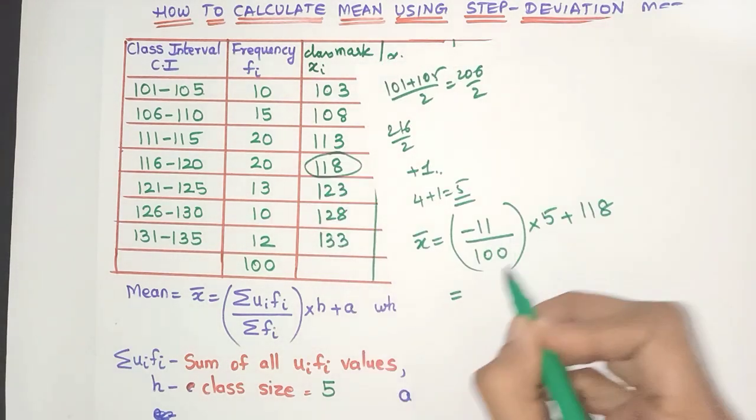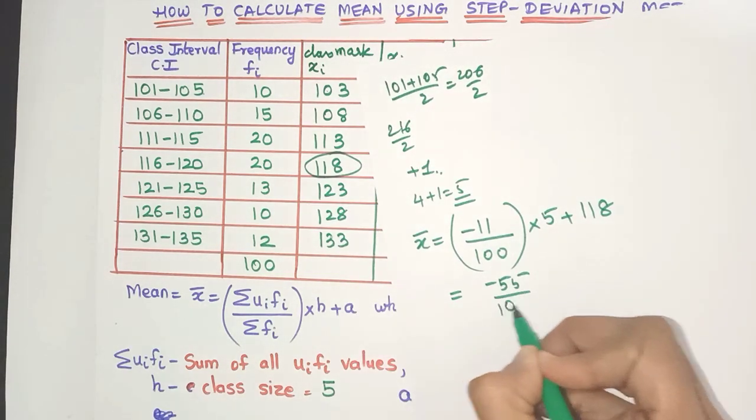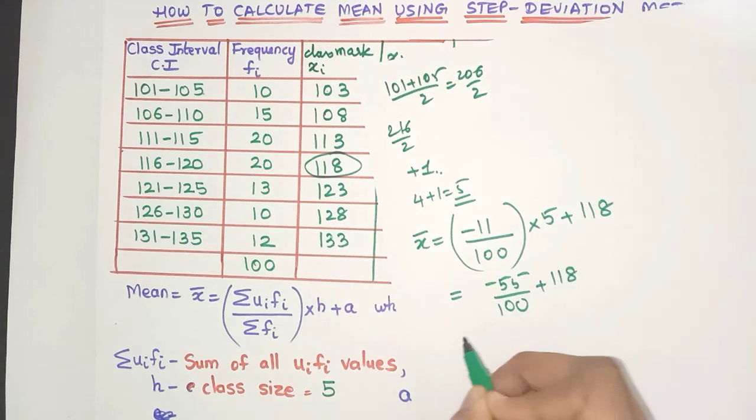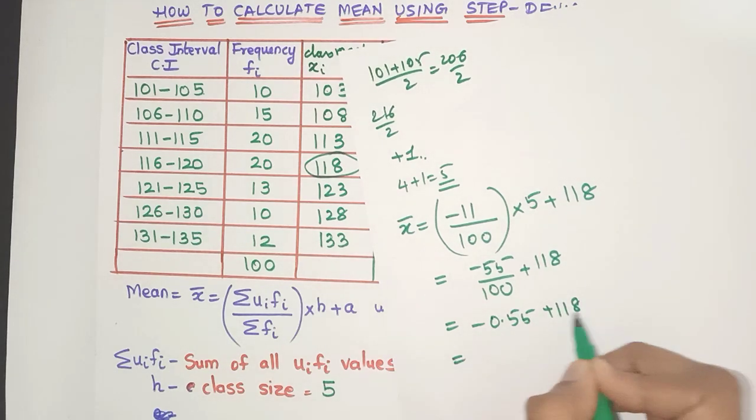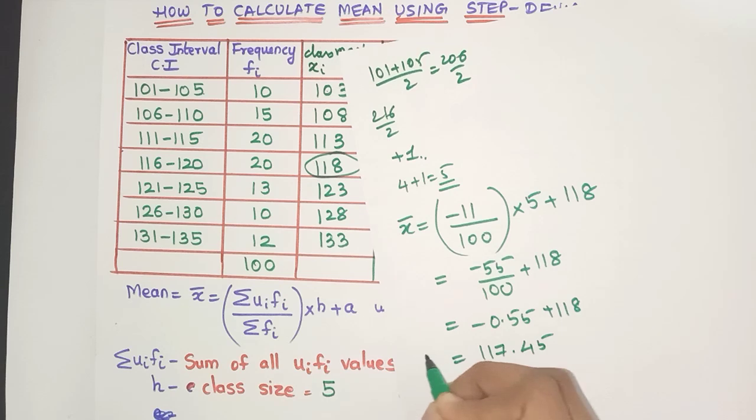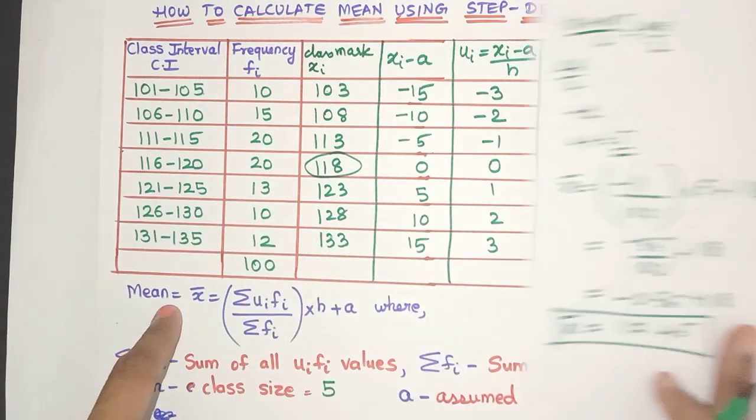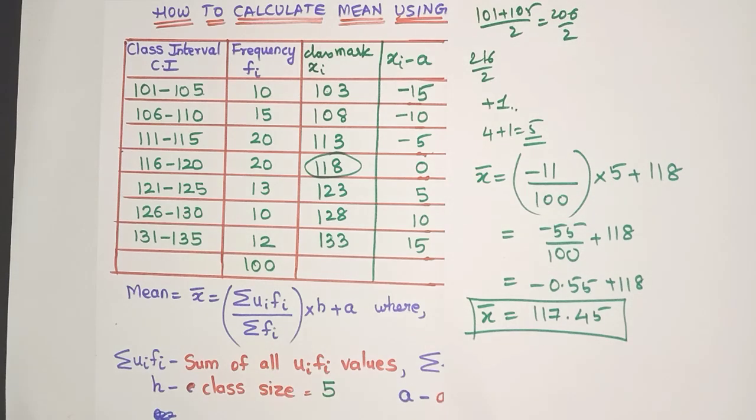So here I'll get minus 55 by 100 plus 118. Now this would be minus 0.5. No need to cancel, you can directly write it like this, plus 118. Now remember, you have to subtract. So on subtraction, I'll get 117.45. And friends, here is the mean value for this data using the step deviation method.